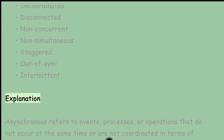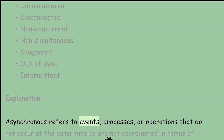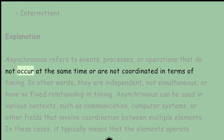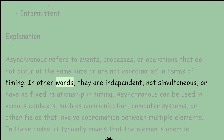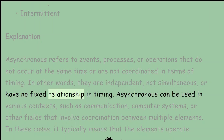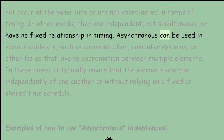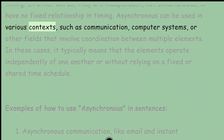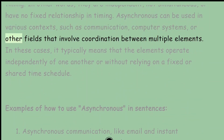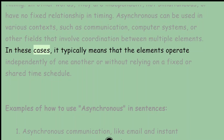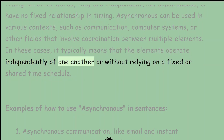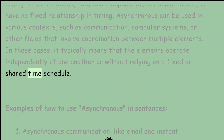Explanation. Asynchronous refers to events, processes, or operations that do not occur at the same time or are not coordinated in terms of timing. In other words, they are independent, not simultaneous, or have no fixed relationship in timing. Asynchronous can be used in various contexts, such as communication, computer systems, or other fields that involve coordination between multiple elements. In these cases, it typically means that the elements operate independently of one another or without relying on a fixed or shared time schedule.